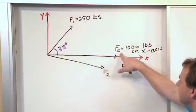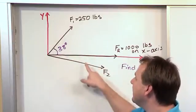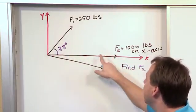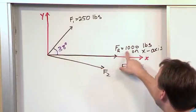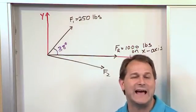Now we're also given the resultant. Notice this is the resultant. So we have F1 and F2, and they add together to give us F resultant here. And we're given this, and we're told that it's 1,000 pounds, and it lies exclusively along the x-axis.